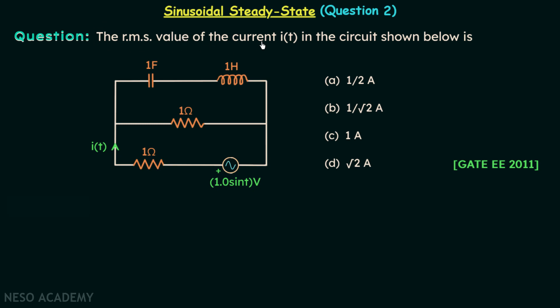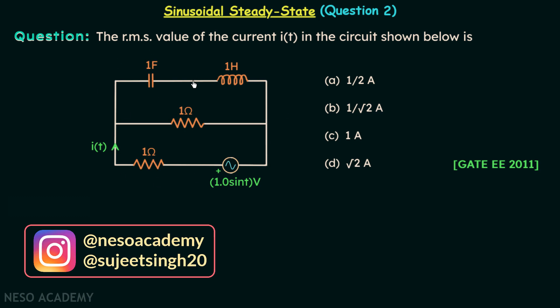The root mean square value of the current IT in the circuit shown below is. This is the circuit and we are required to find out the RMS value of this current, and there are four options given in the question.